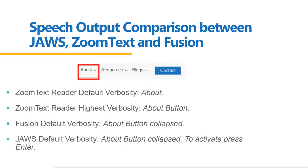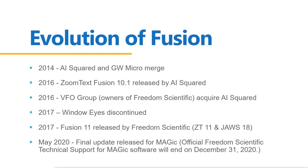In 2014, AI Squared and GW Micro merged, putting ZoomText and Window Eyes under the same umbrella. In 2016, ZoomText Fusion was released by AI Squared — the first version with a full screen reader built in. Also in 2016, VFO Group acquired AI Squared. In 2017, Window Eyes was discontinued, and Fusion 11 was released by Freedom Scientific — the first version where ZoomText and JAWS were running together. Official Freedom Scientific technical support for Magic ended on December 31st of last year.